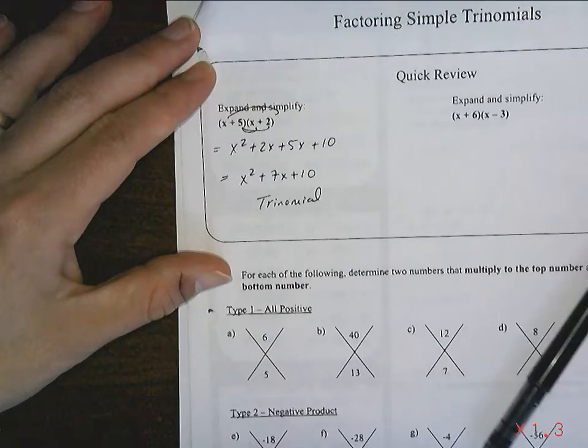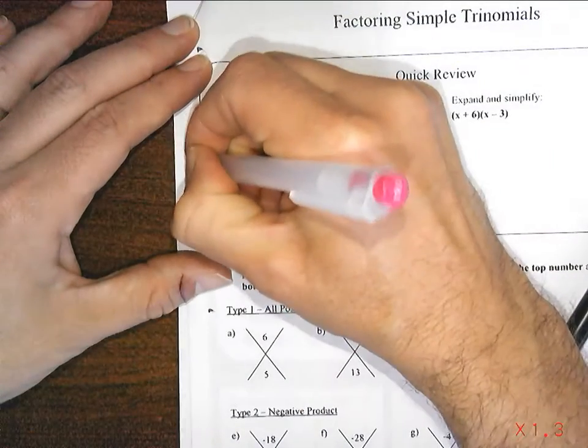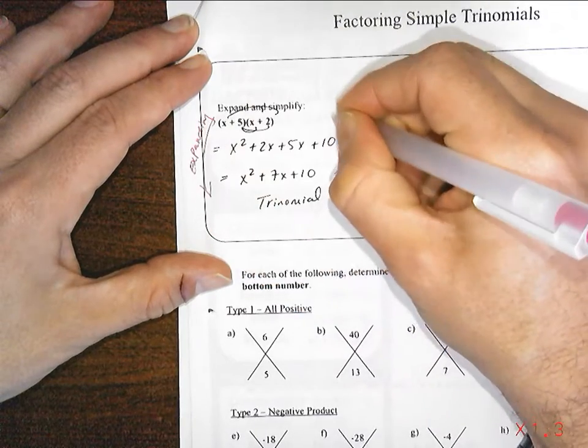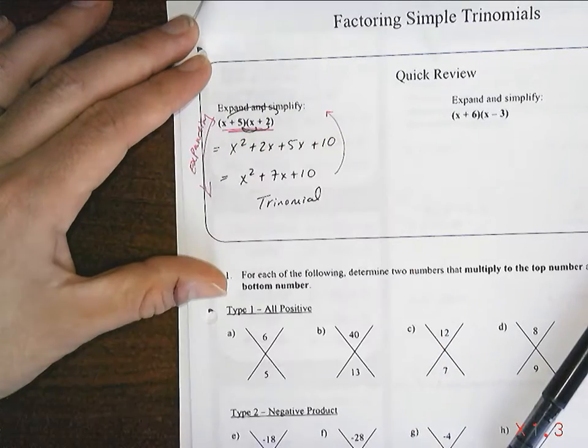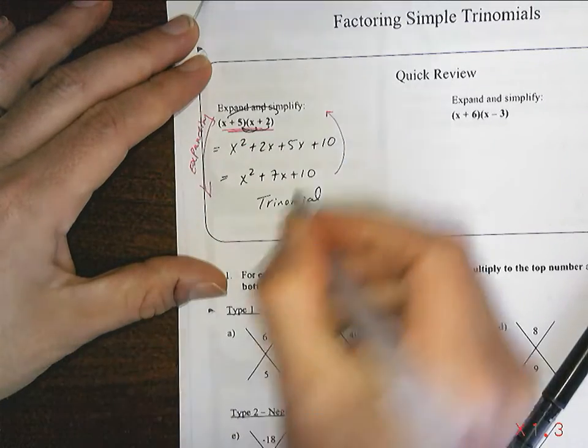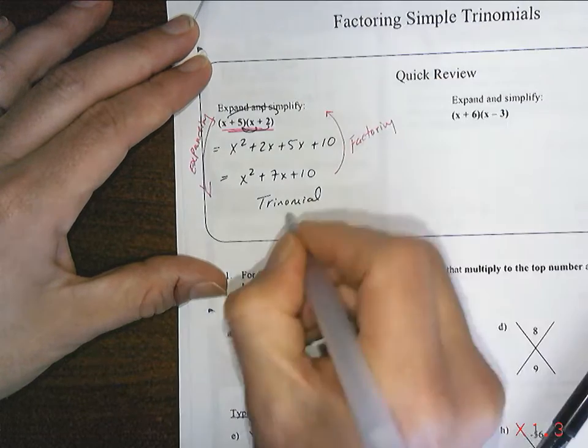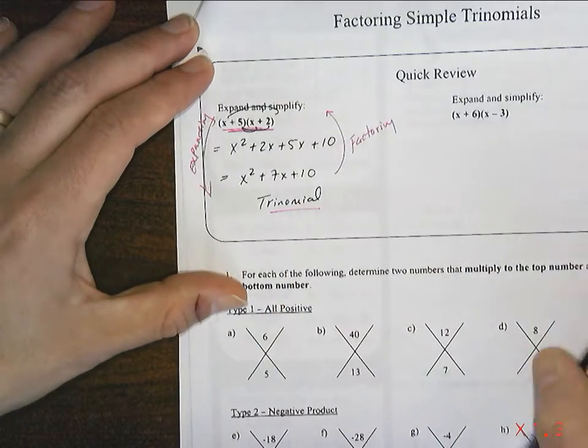When we go this way, it's called expanding. What we're going to learn today is how to go this way. How to take a trinomial back to its two binomials. And that's called factoring. It's a special type of factoring, actually called trinomial factoring, because you're taking a trinomial and factoring it.